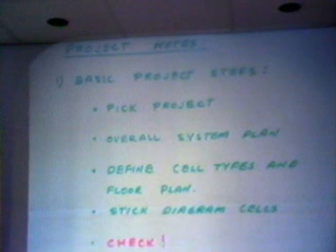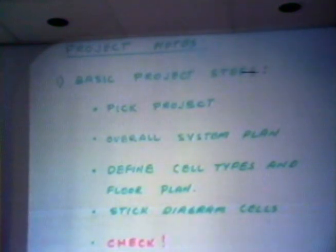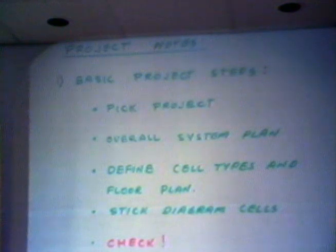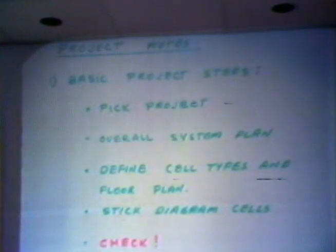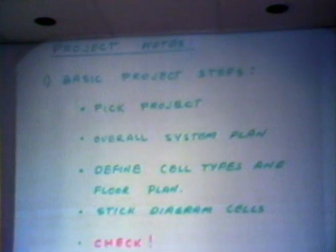On to projects. Number one, of course, you have to pick your project — you ought to be picking your project very soon, because there's obviously not much time and a lot of steps to go through in actually implementing it. You'll want to do an overall system design and define how the cells you envision are going to lay out in a floor plan — an outline of the cells and which ones are going to interconnect with which ones. Determine the pitch, find the biggest cell, work on that one first, and then match the others to it.